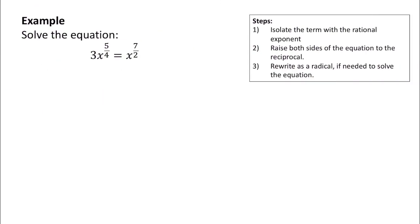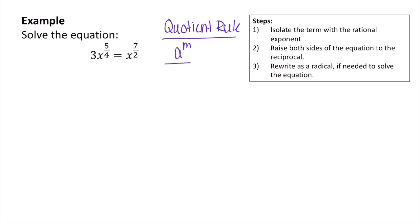What if we need to solve the equation 3 times x to the 5 fourths equals x to the 7 over 2? Notice we have two terms with rational exponents, so our strategy here is going to be to try and combine them using the quotient rule. If I divide two terms with the same base but different exponents, I can combine them by subtracting the exponents.